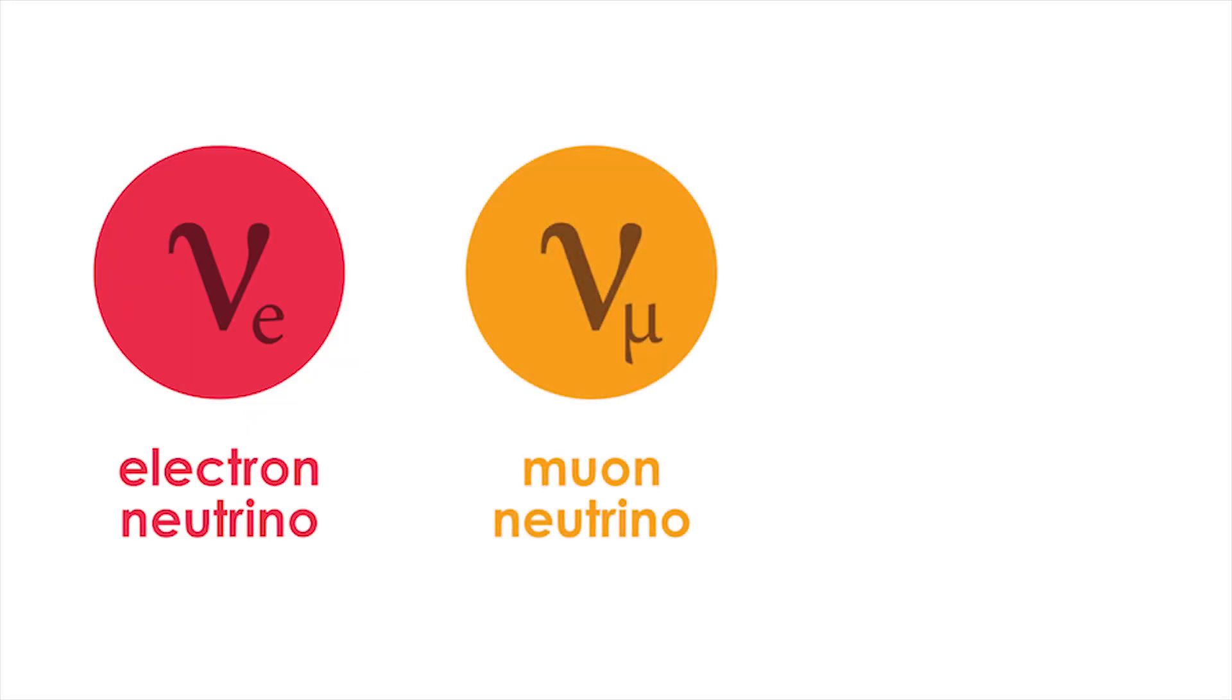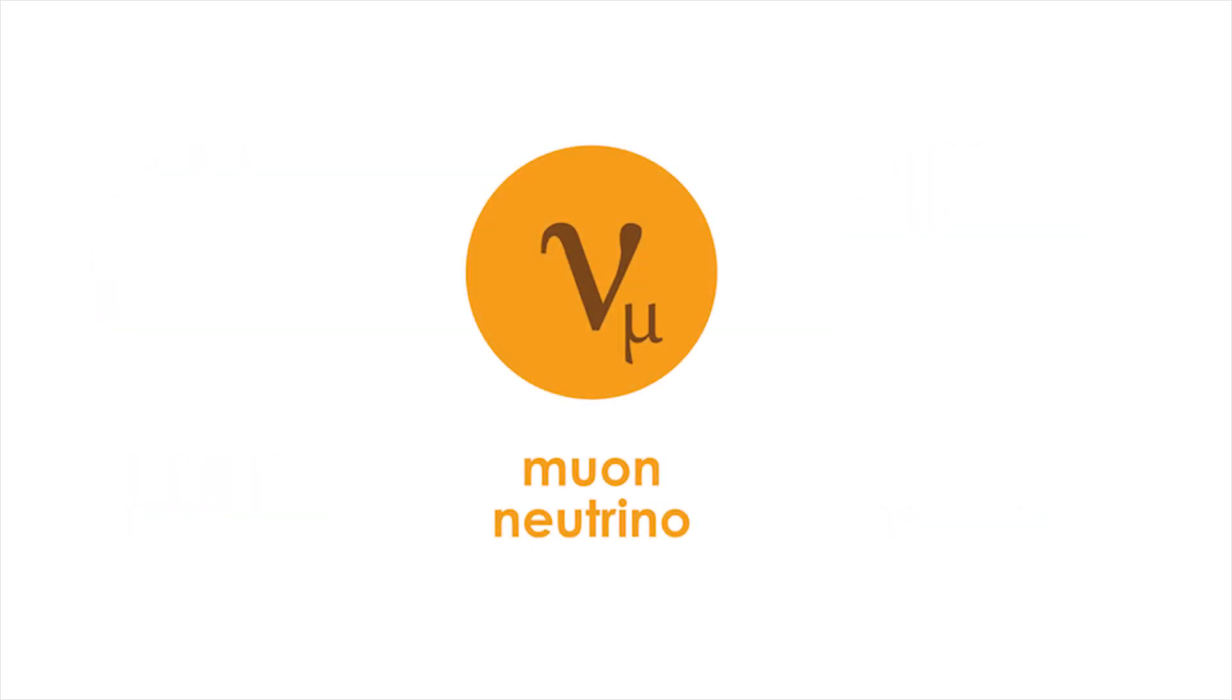The strangest aspect of neutrinos is that they come in three flavors, and as they travel, they can switch between these flavors through what is known as oscillations.